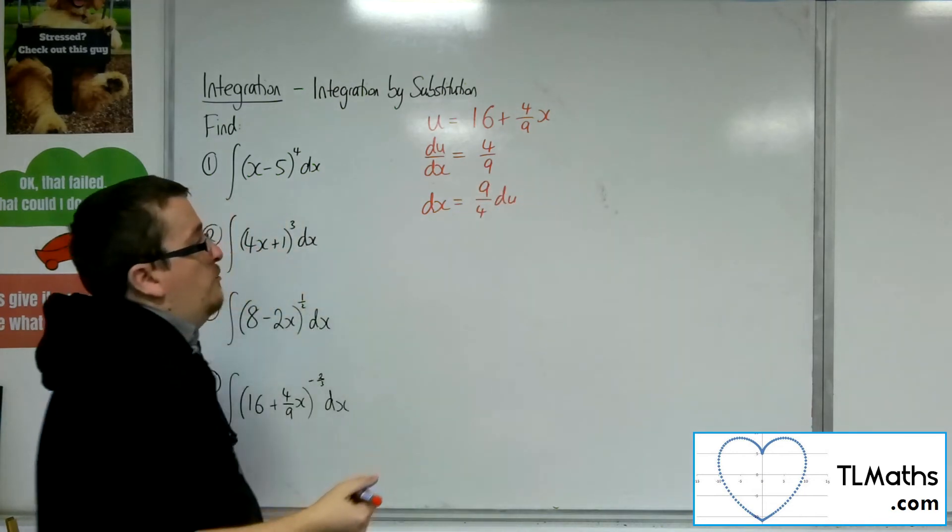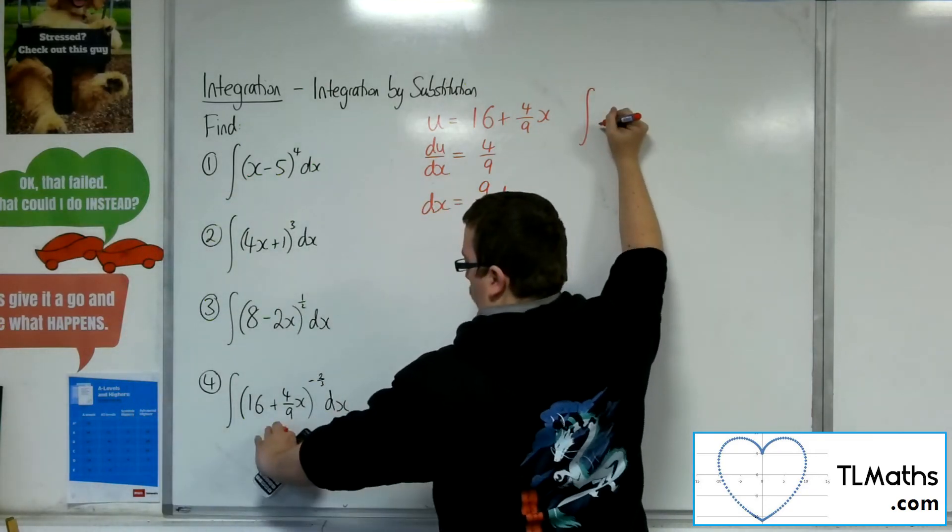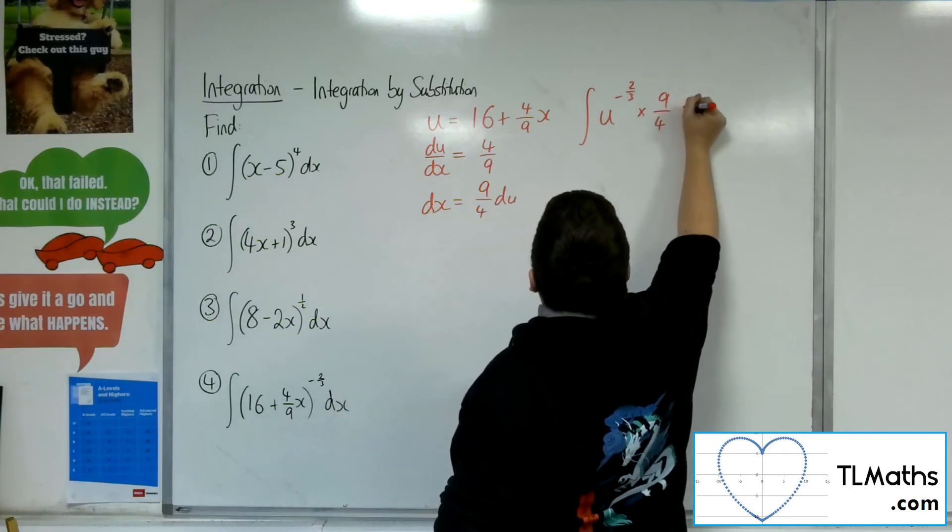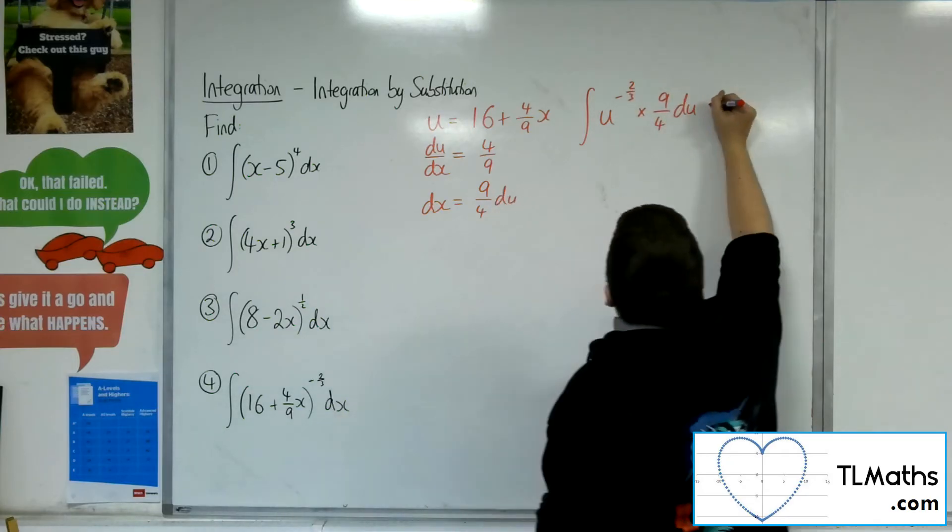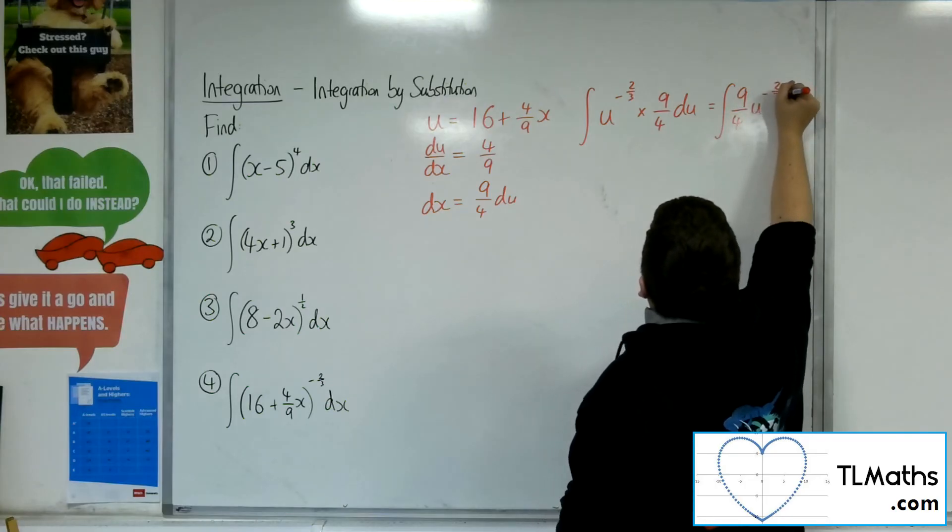By rearranging that. So we're going to have the integral of u to the minus 2 thirds times by 9 quarters du. So tidying that up, we've got 9 quarters u to the minus 2 thirds du.